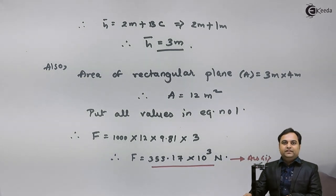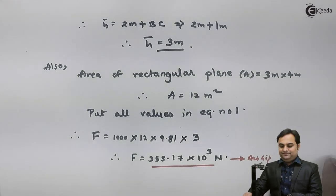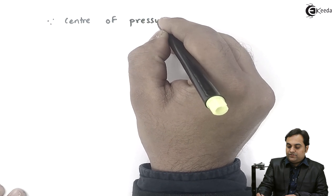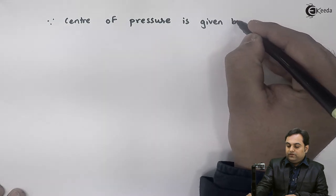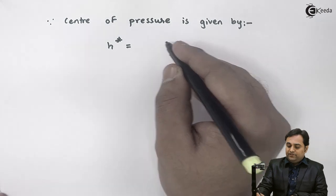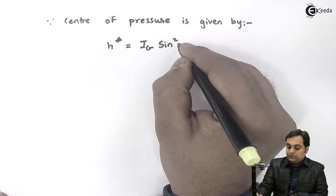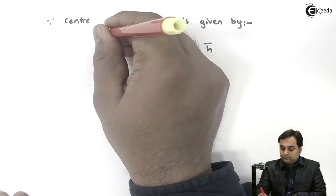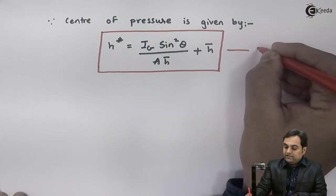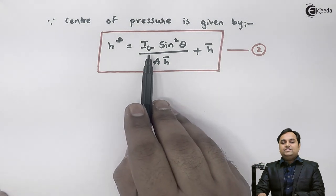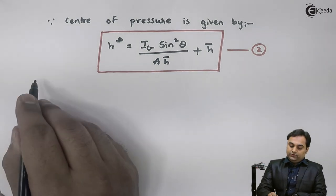Next I will calculate the center of pressure, which is the single point where the hydrostatic force acts. For an inclined plane surface, center of pressure h* is given by: h* = (I_G × sin²θ)/(A × h̄) + h̄ — I will call this equation number two. We have all values except I_G, the moment of inertia about the centroid.